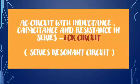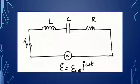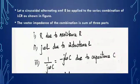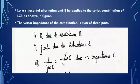An AC circuit with inductance, capacitance, and resistance in series — the LCR circuit — is a resonant circuit. The circuit diagram shows an inductor L, capacitor C, and resistor R connected in series, with an AC EMF applied equal to E₀e^(jωt). We need to find the current when this sinusoidal alternating EMF is applied to the series LCR combination.